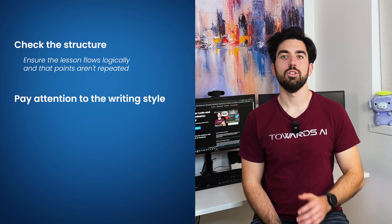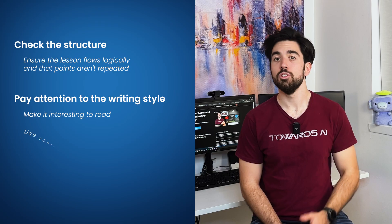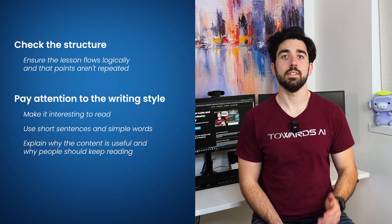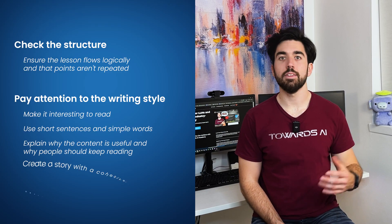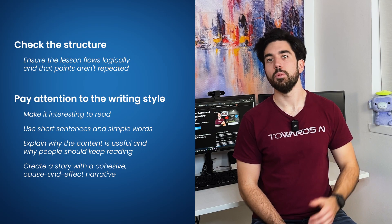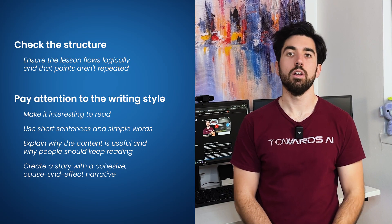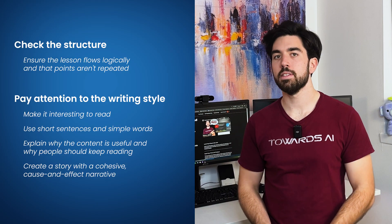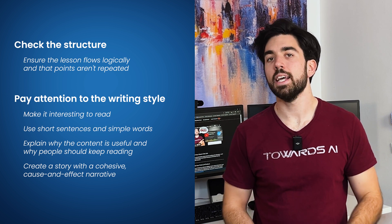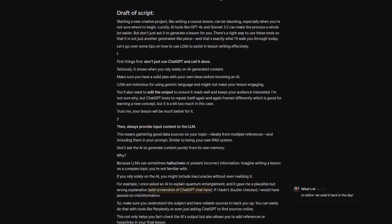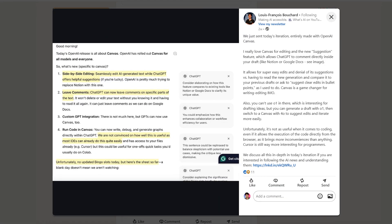Finally, pay attention to the writing style. Make it interesting to read using short sentences and simple words — basic grammar and syntax 101. Explain why the content is useful and why people should keep reading. Get the text into a story with a good narrative where each action or its consequence leads to the next. LLMs tend to write in a bland style, so by adding your unique voice you set yourself apart. You can give past writing examples and tell the AI to follow your style. Remember, this approach isn't just for lessons or blog posts — you can use it to generate scripts for video lessons or even social media posts.